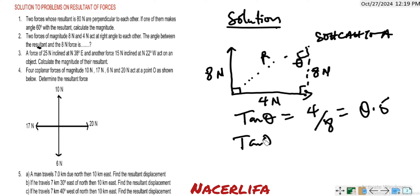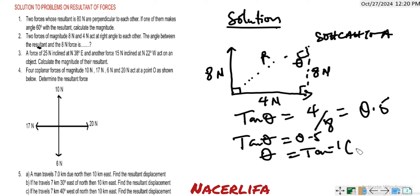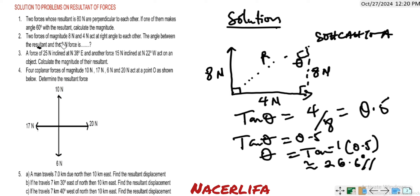Tan θ = 0.5. To get the angle, we take tan inverse of 0.5. Tan inverse of 0.5 is approximately 26.6 degrees. So the angle between the resultant and the 8 Newton force is 26.6 degrees.